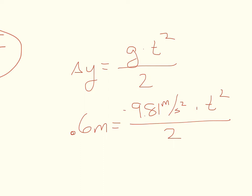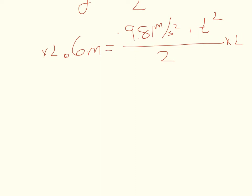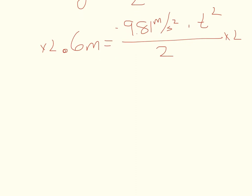Because I want to get this time by itself I have to remove these other numbers that are stuck onto it with multiplication and division. I'm just going to get rid of this 2 first so I'll multiply both sides by 2 and that will leave me on one side with 1.2 meters and on the other side negative 9.81 meters per second squared times time squared.